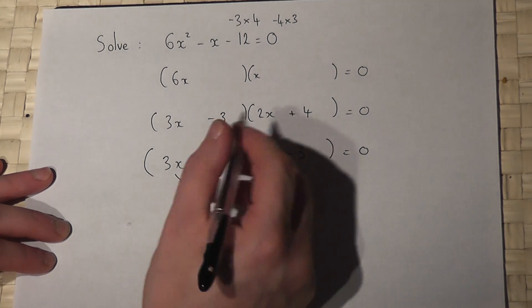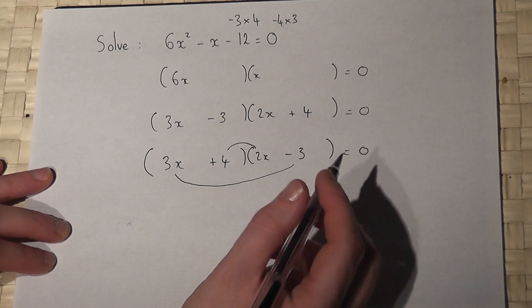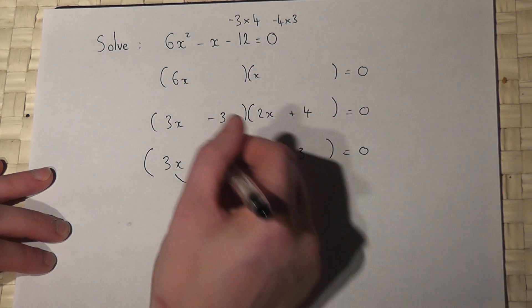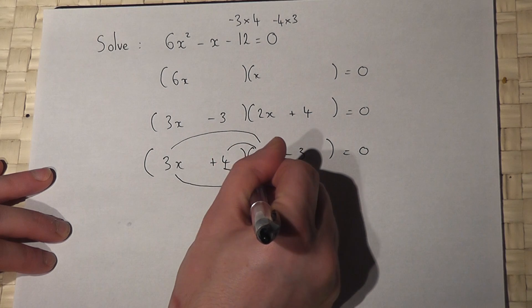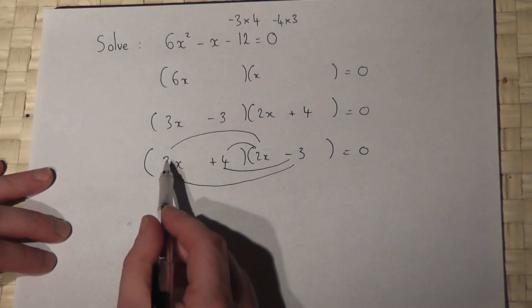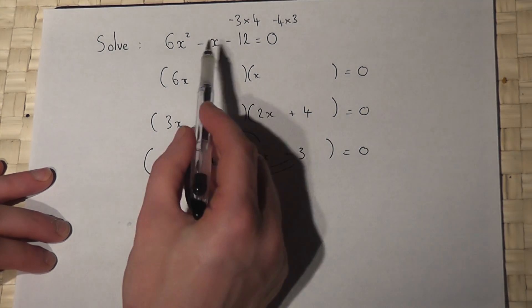And I've also got my 6x squared, and I've also got my minus 12. So this pair of brackets expands to give that there.